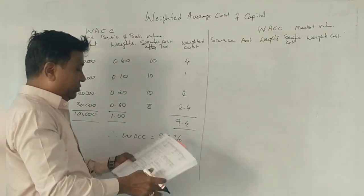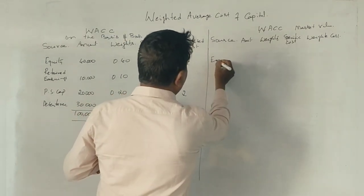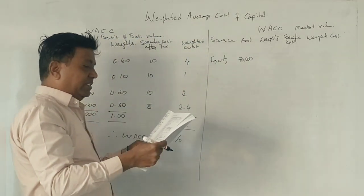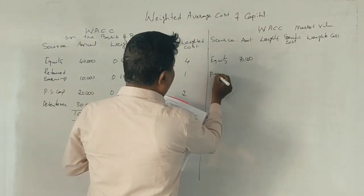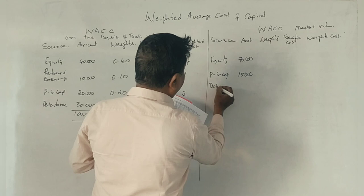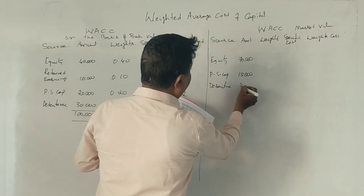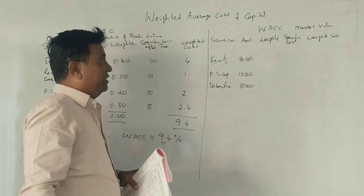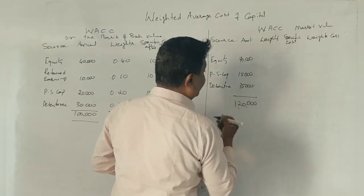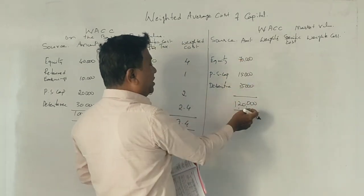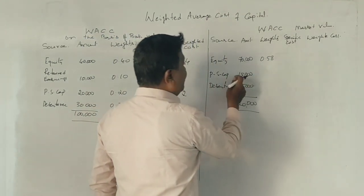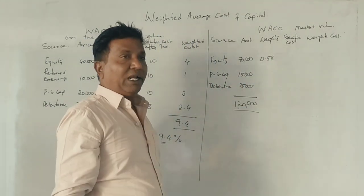Weighted average cost of capital using market value: market value of equity is 70,000, retained earnings amount — preference share capital 15,000, debentures 35,000. Total is 1,20,000. Based on market value: 70,000 divided by 1,20,000 = 0.58. 15,000 divided by 1,20,000 = 0.12.